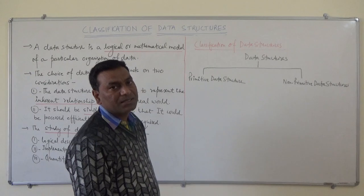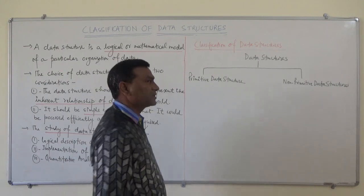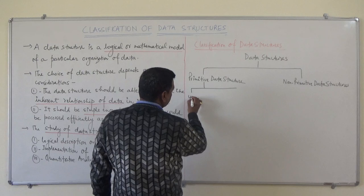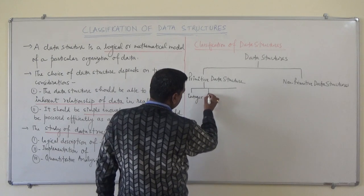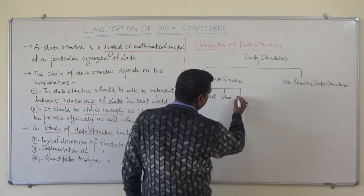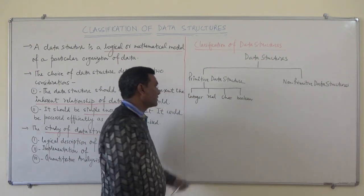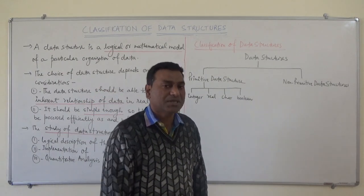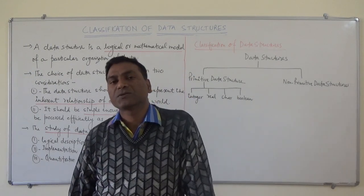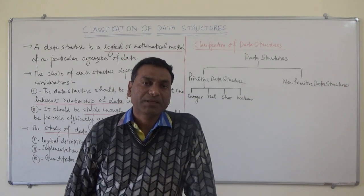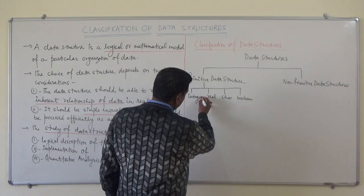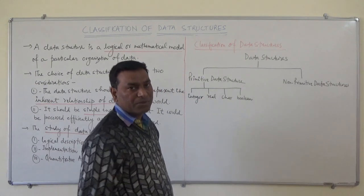Primitive data structures are basically built-in types or simple data types, such as integer, real, character, and boolean. They include the types which cannot be further divided. The integer type can store positive or negative values, it can occupy two bytes of memory, and there is some range that depends on the memory it occupies.